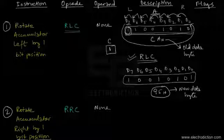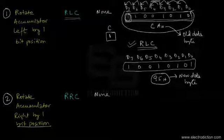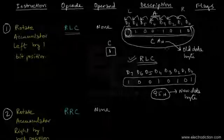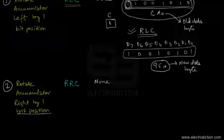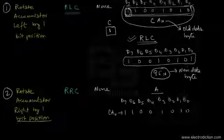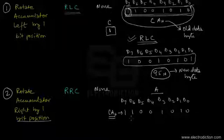Taking an example, let's say the accumulator content is CAH — the same data as the previous example. Now at this particular moment, if we apply the RRC instruction, the accumulator bits would shift towards the right by one bit position.